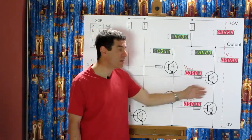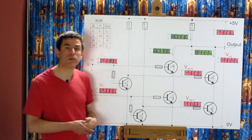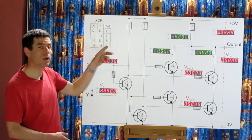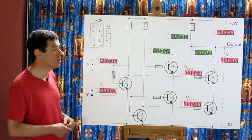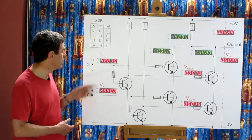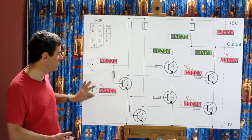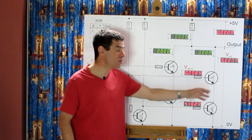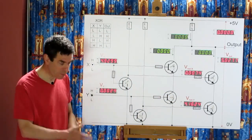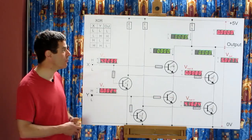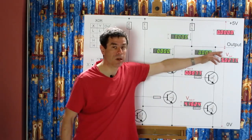So because these are in parallel, they're giving us the OR function, which is why we can have two entries in our output column which are low. When X and Y are different either way round, neither of these pairs of transistors provides a through path for the current, so no current flows and that output is high.